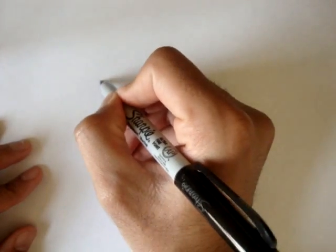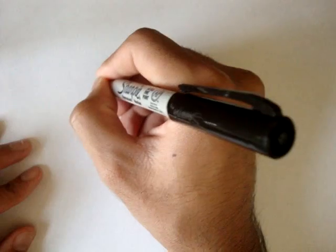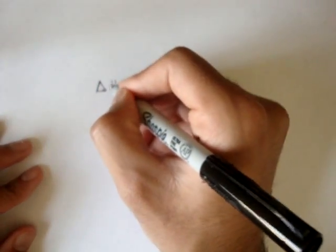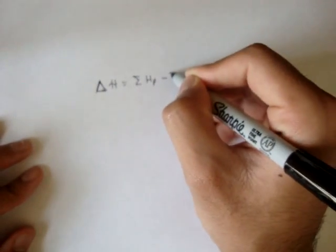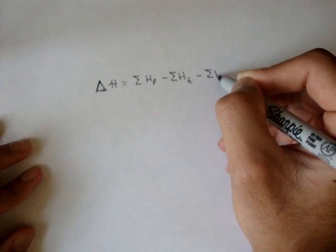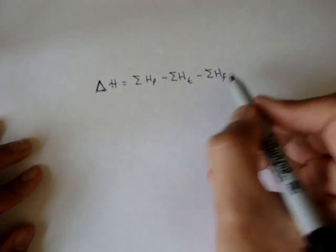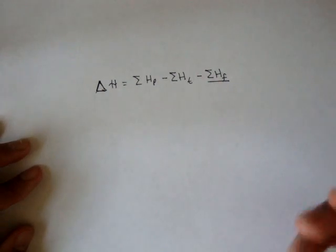Remember our total energy head equation is delta H, the change in total energy head, equals the summation of all the pump heads minus the summation of all the turbine heads minus the summation of all the frictional head losses. And for our frictional head losses we have two different types.